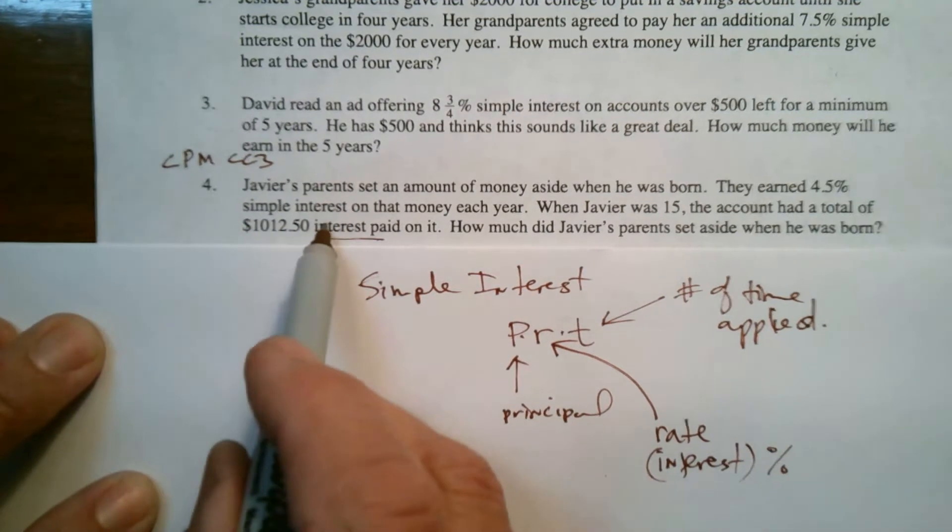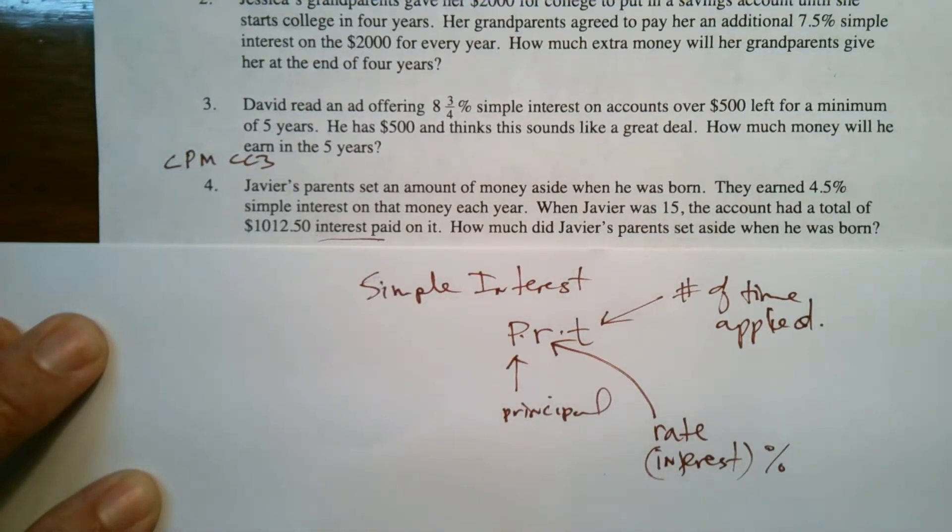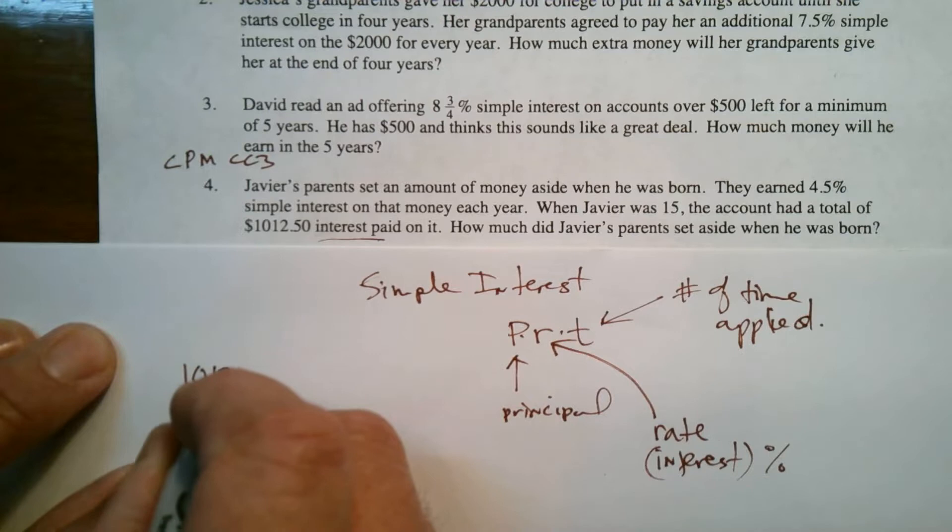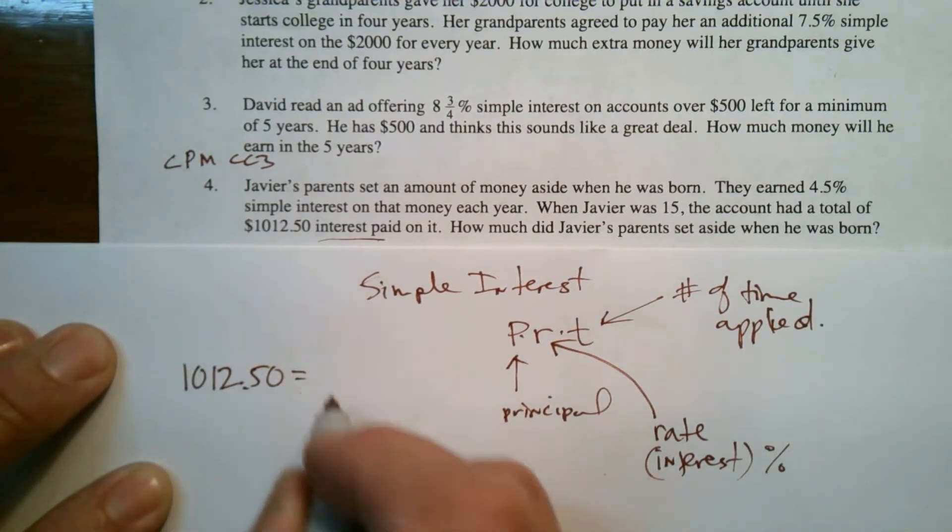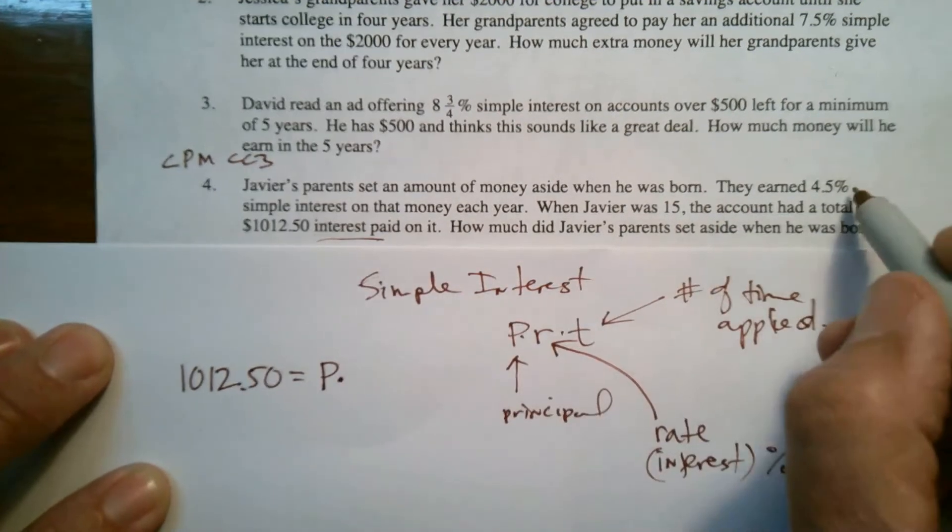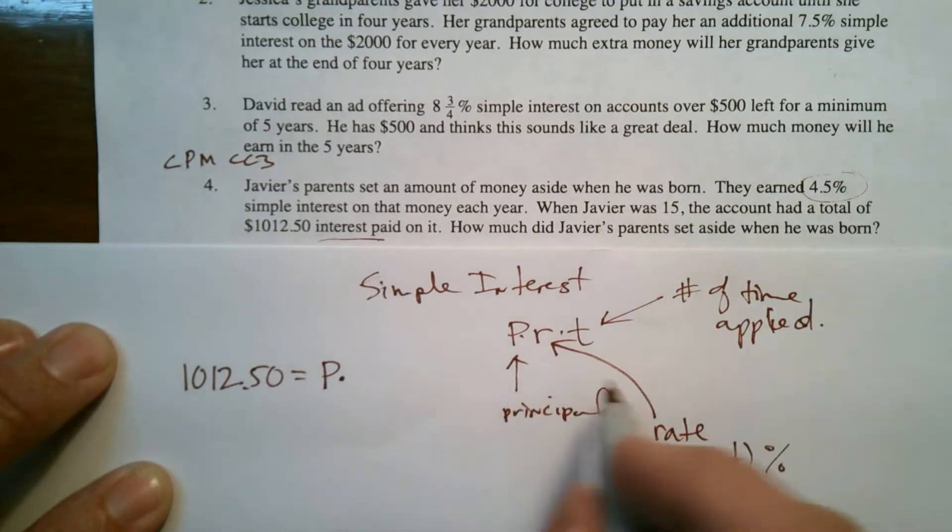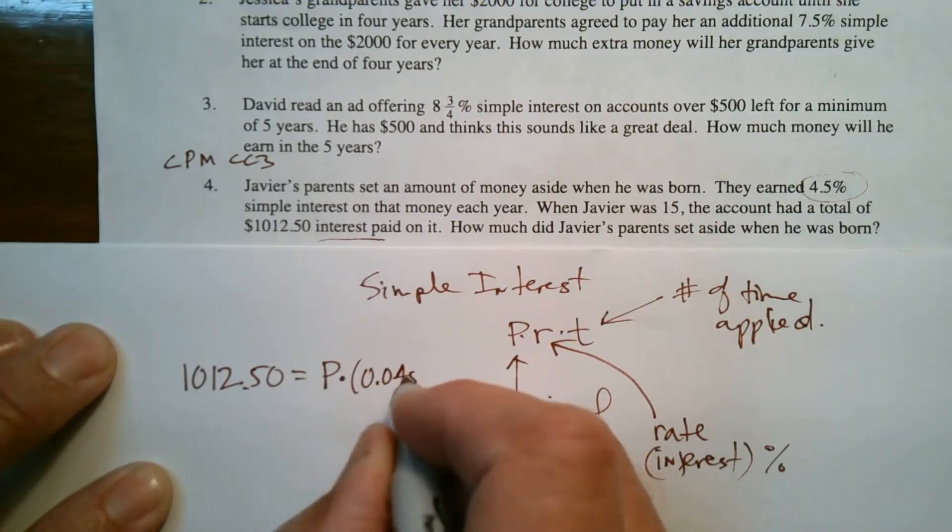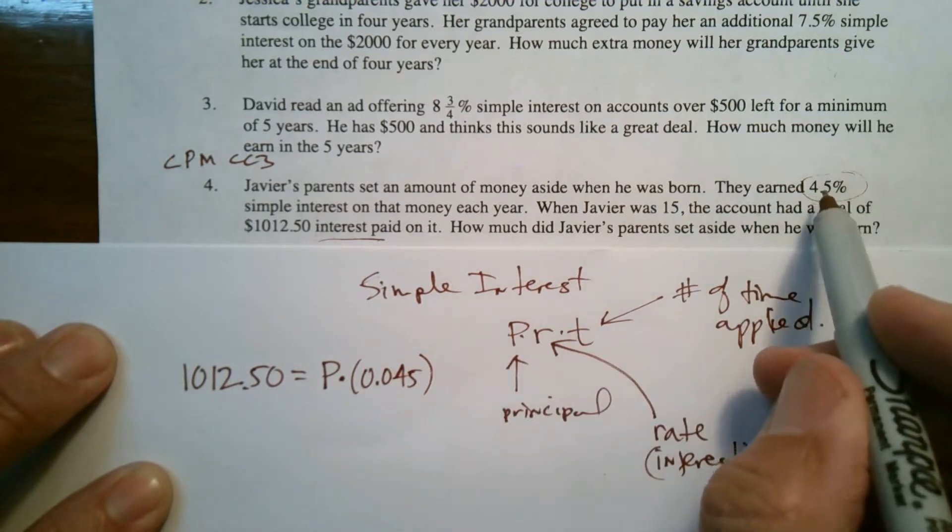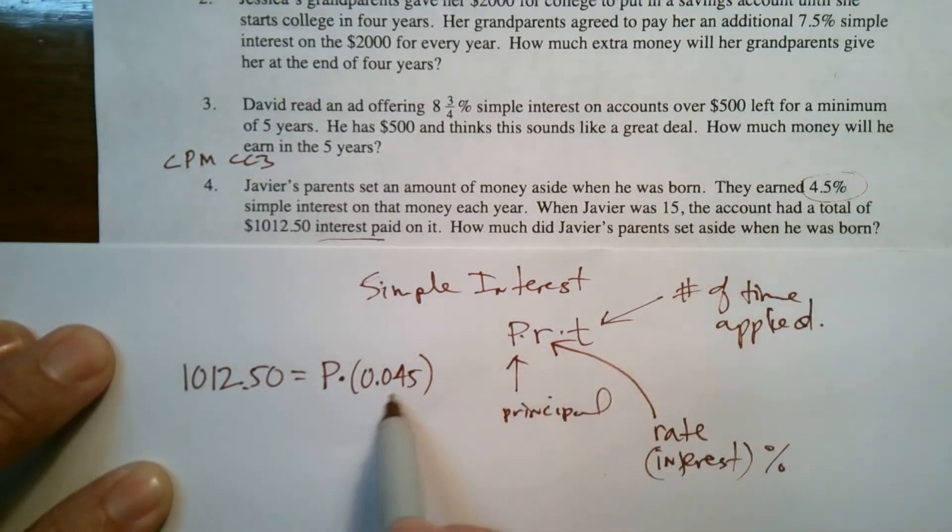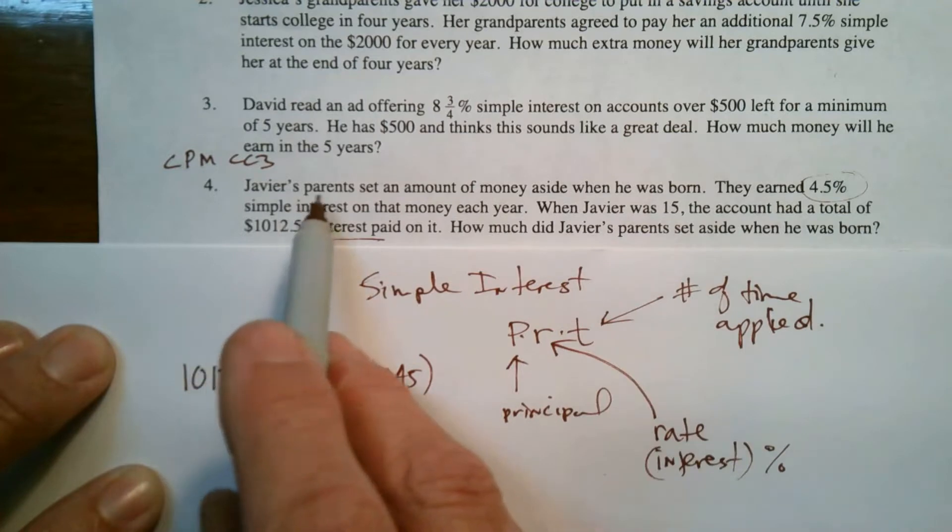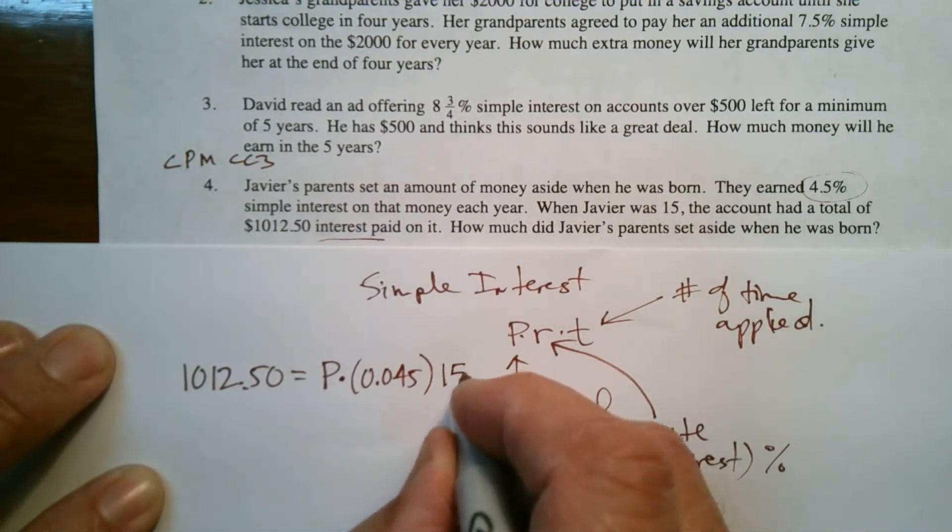So if I have this as my total interest, then what I want to do is basically figure out what that T is. So I can build an equation. I could say my total interest, $1,012.50 is equal to the principal, which we don't know. That's what we're trying to figure out times the rate. Well, my rate is four and a half percent, but I've got to put it as a decimal 0.045. I can't use it as the percent. I have to always convert my percent to something I can multiply, which is as a decimal or fraction. And then 15. So for 15 years, that's how many times it was applied.